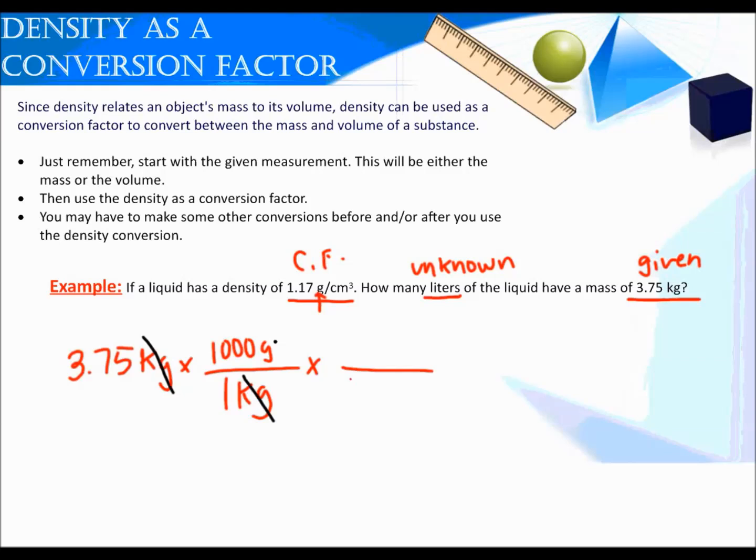I now am dealing with grams, so I can use my density conversion factor. The 1.17 grams will go on the bottom. The 1 centimeter cubed will go on top, so that grams can cancel out. I'm trying to get all the way to liters. I'm in centimeters cubed, so at least I'm in units of volume. What I do know is that in 1,000 centimeters cubed, that's the same as 1 liter. Remember that a centimeter cubed is the same thing as a milliliter. Since I know 1,000 milliliters equals a liter, 1,000 centimeters cubed equals a liter. We're canceling centimeters cubed, and I have the unit I want, which is liters.